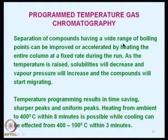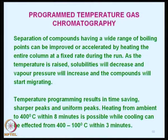The wide range of boiling points can be improved or accelerated by heating the entire column at a fixed rate during the run. As temperature is raised, solubility decreases and vapor pressure increases, causing compounds to start migrating. Temperature programming results in time saving, sharper peaks, and uniform peaks. Heating from ambient to 400 degrees centigrade within 8 minutes is possible, while cooling from 400 to 100 degrees centigrade can be effected within 2 to 3 minutes.